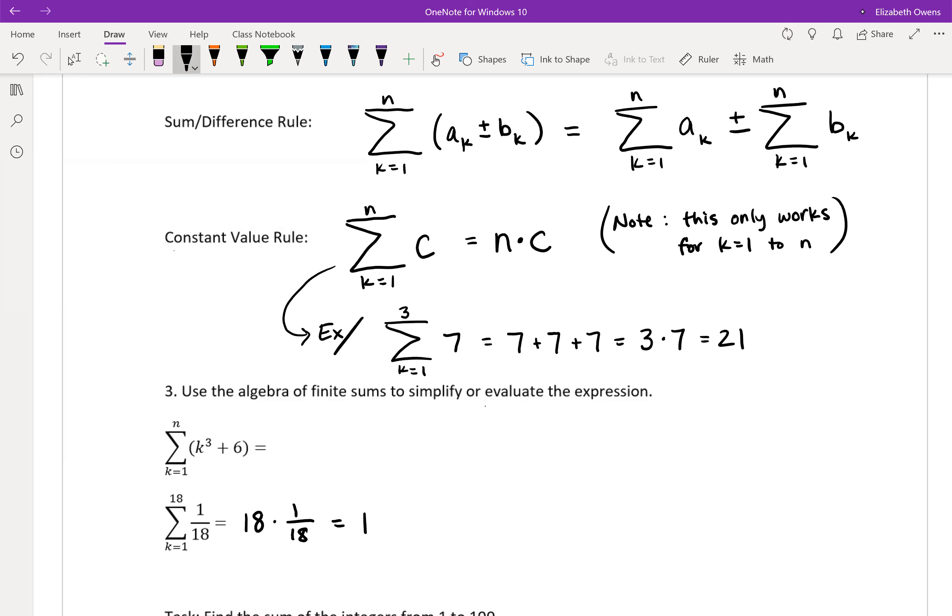So notice here we've got k equals 1 to n, and then the formula for our terms is k cubed plus 6. So basically we've got ourselves like an a sub k and plus a b sub k type of thing.